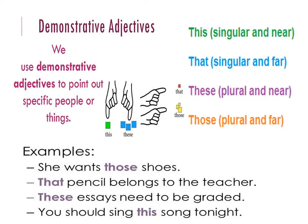Let's look at what demonstrative adjectives are. We use demonstrative adjective to point out specific people or things. Words like this, these, that, and those are used in a sentence. 'This' is used in singular form for something nearby. 'That' is used for singular and something far off. 'These' is for plural form and something nearby. 'Those' is for plural form and something far off.